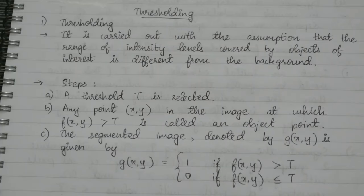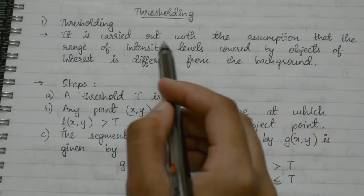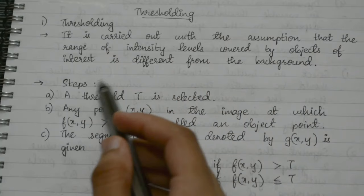Hey guys, welcome to the 25th lecture of the DIP series. This is Anushri Karishki and today we're going to study about thresholding. Whenever we do thresholding, it is carried out with the assumption that the range of intensity levels covered by objects of interest is different from the background.